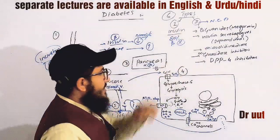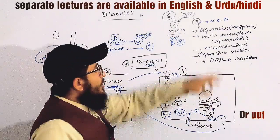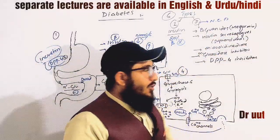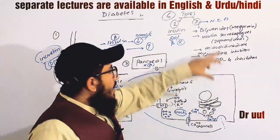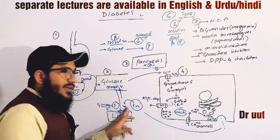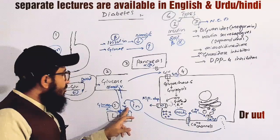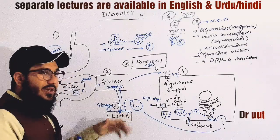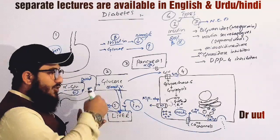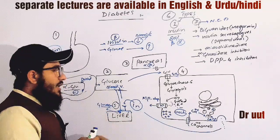In type 2, since the problem is with the receptors, we use specific drugs. One important class is biguanides, whose prominent drug is metformin. Metformin is used to activate the receptors in order to do their job. When receptors are activated, there will be absorption of glucose from the blood into the liver, and like this, blood sugar level will be maintained.